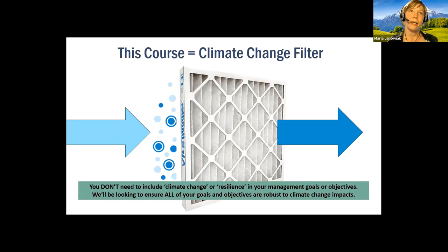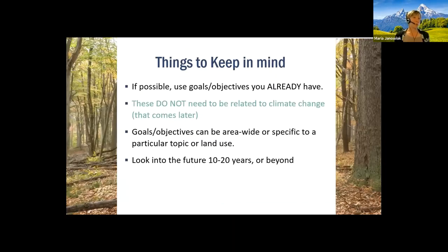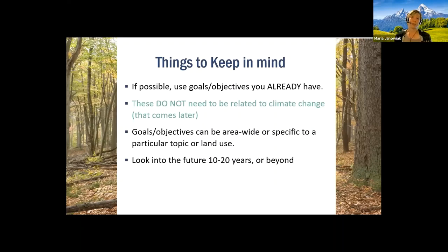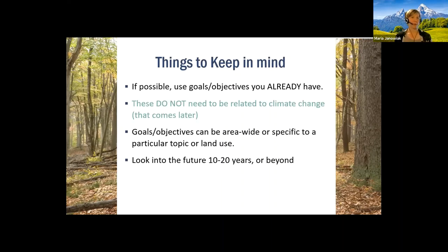A few last things to keep in mind: if possible, use goals and objectives you already have. If you've picked up a management plan or document already in place, you already have that work done — maybe touch it up a little, but you're set. They don't need to be related to climate change — we'll do that later. You can split your goals and objectives across an entire property or project area, or they can be specific to a particular topic or land use. Push yourself to look into the future 10 or 20 years or beyond — if you're just developing a list of actions for the next five years, it's going to be harder to think about climate change, so try to push your time horizon out a little longer.